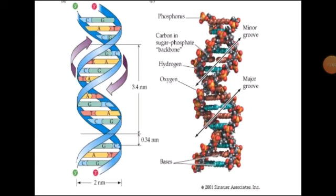Five different forms of DNA have been reported in living organisms: A-DNA, B-DNA, C-DNA, D-DNA, and Z-DNA. These forms largely conform to the double helical structure proposed by Watson and Crick.